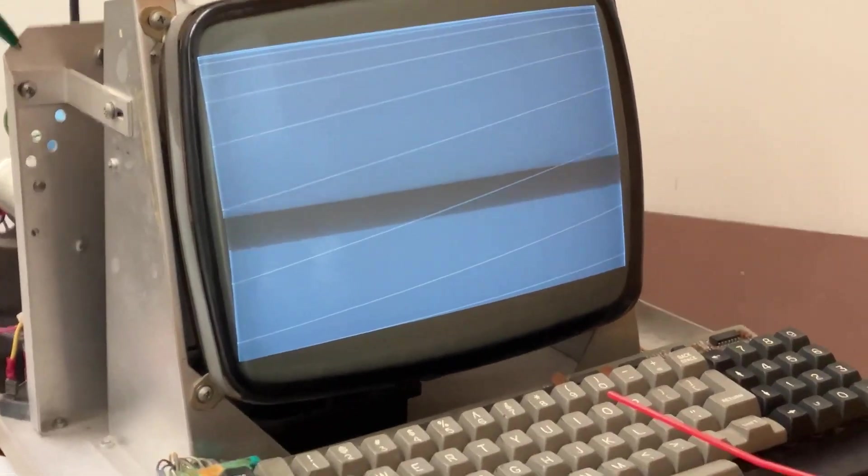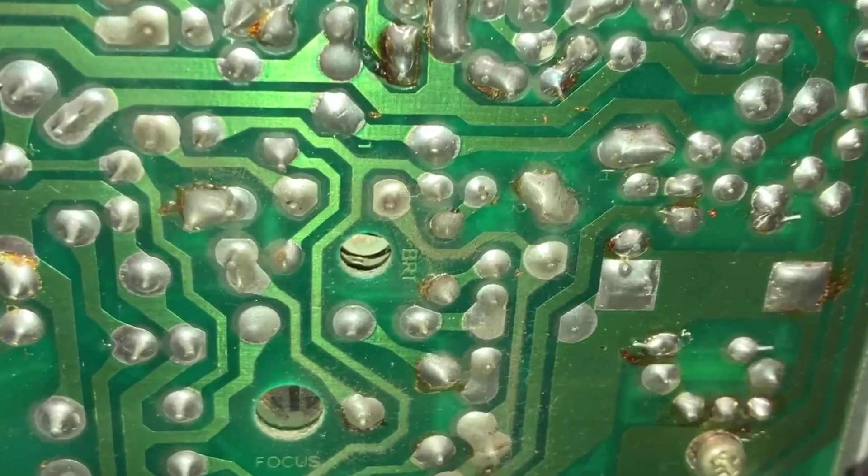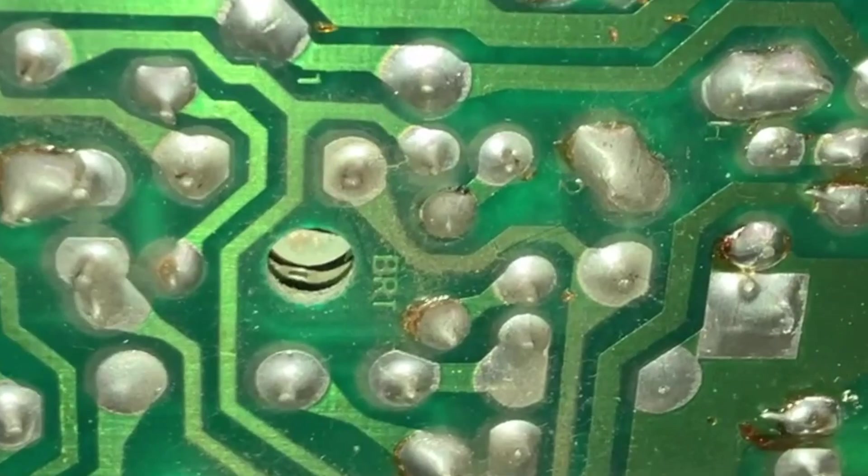We are getting scan lines though, but I think I know what to check next. See that trim pot that says bright? I turned that counterclockwise and that made some lines appear.